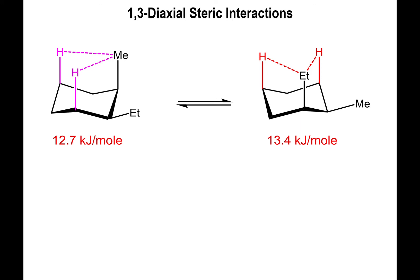Okay, here we go. This is the last portion of the analysis, the energy analysis of the cyclohexane conformer. In the previous video, I showed you how to calculate the energies that we have here, the 12.7 and the 13.4, based on the Newman projections and the Gauche interactions of the ethyl and methyl groups as they relate to the rest of the cyclohexane molecule.